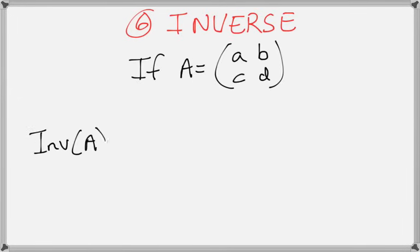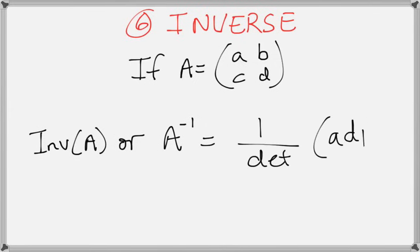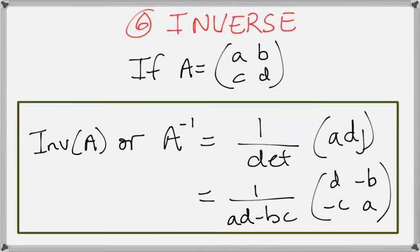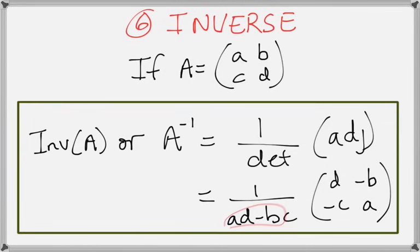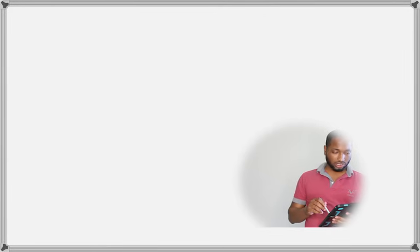Now for actually finding the inverse: if A equals [a b; c d], then A inverse equals 1 over the determinant multiplied by the adjoint. To find the inverse of a matrix, find the determinant separately, put it under 1, and multiply by the adjoint matrix.